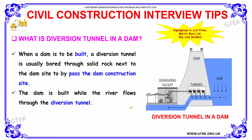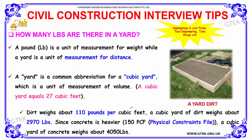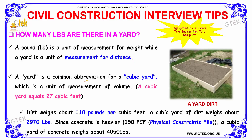How many lbs are there in a yard? A pound (lb) is a unit of measurement for weight, while a yard is a unit of measurement for distance. 'Yard' is commonly used as an abbreviation for cubic yard, which is a unit of volume. A cubic yard equals 27 cubic feet.